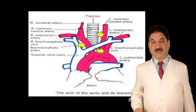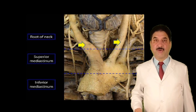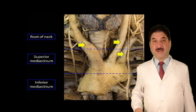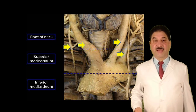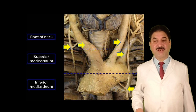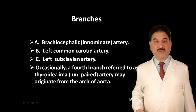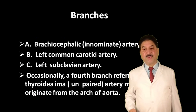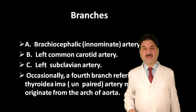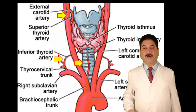In this wet specimen we can see the right brachiocephalic trunk, left common carotid artery, and left subclavian artery originating from the arch of aorta. The right subclavian artery is related to the right recurrent laryngeal nerve, which hugs it to enter the neck. In contrast, the left recurrent laryngeal nerve, after originating from the left vagus, is related to the ductus arteriosus. Occasionally, a fourth branch referred to as the thyroid ima artery may originate from the arch of aorta. The thyroid gland is supplied by the superior thyroid artery (branch of external carotid), inferior thyroid artery (branch of thyrocervical trunk), and occasionally the thyroid ima artery from the arch of aorta or right brachiocephalic trunk.